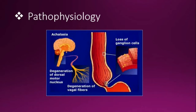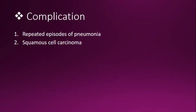This is similar to Hirschsprung's disease. In Hirschsprung's disease the aganglionic portion is contracted, but in achalasia cardia it is dilated — with atony of the proximal esophagus.